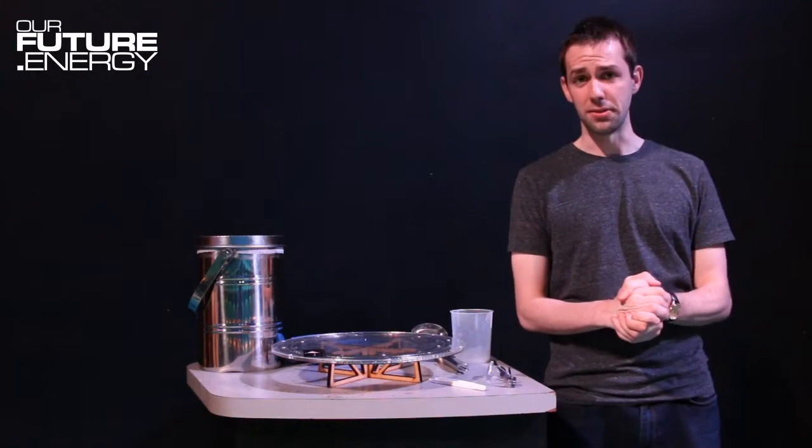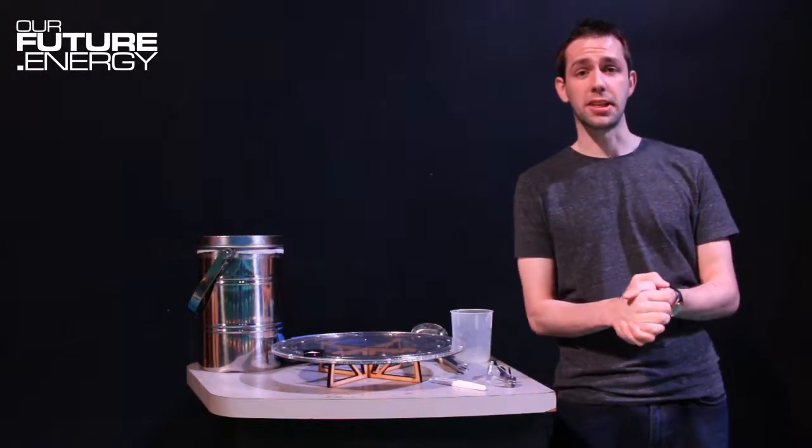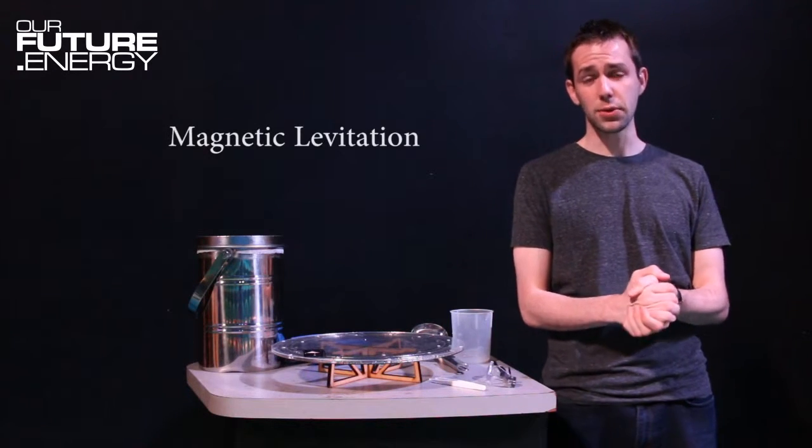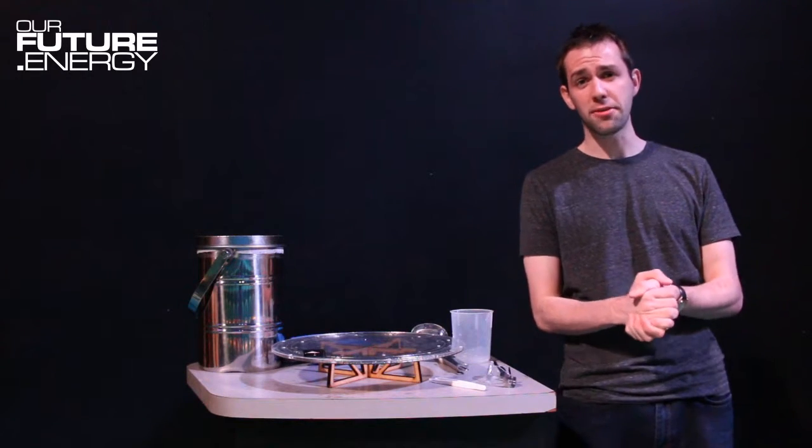Now this technology sounds like make-believe, but in Japan and China there are trains that completely take away any friction by floating above the track. This is called magnetic levitation and uses superconductors, electromagnets, and liquid nitrogen to allow trains to travel up to 500 kilometers an hour.